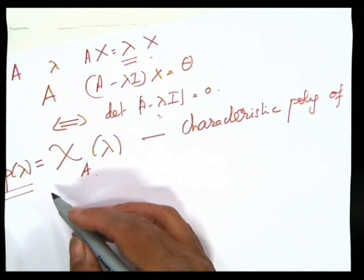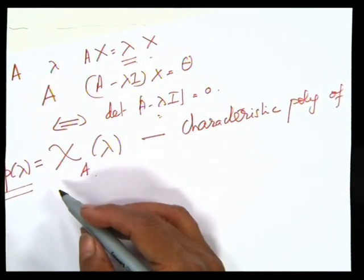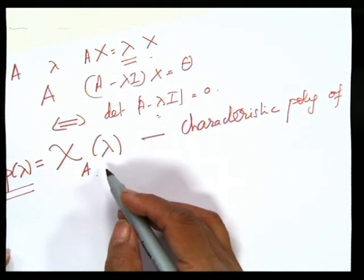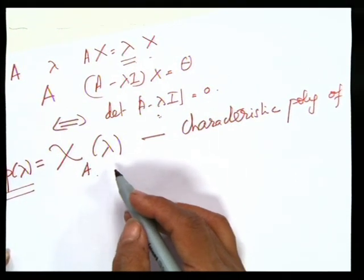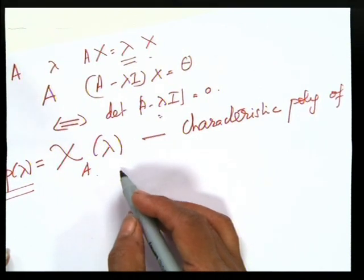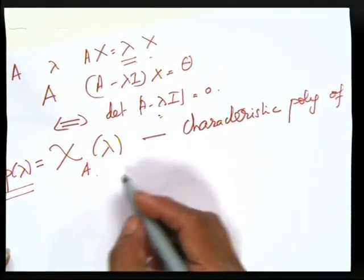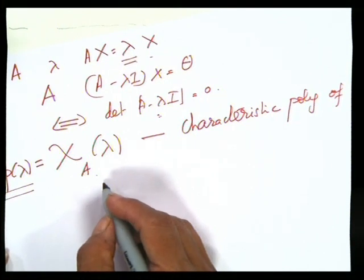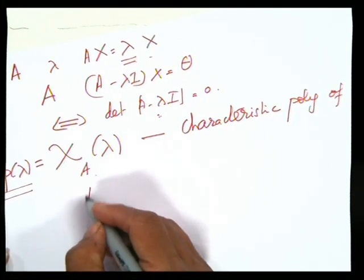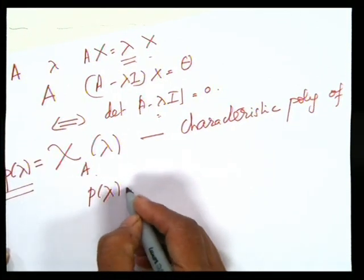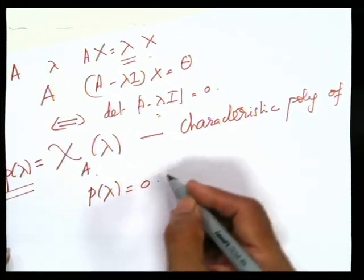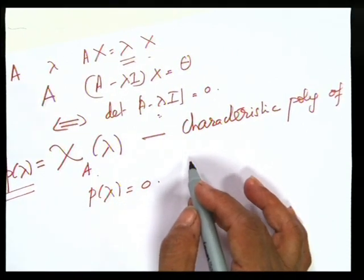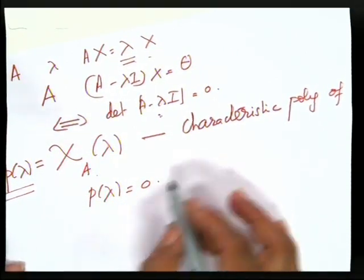Given an equation, it may not have a real root, so a matrix may not have any real eigenvalues. However, because of the fundamental theorem of algebra, p(lambda) = 0 always has a complex root. So every matrix has a complex eigenvalue and a corresponding eigenvector.